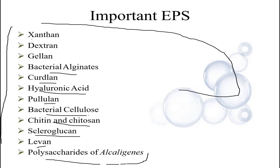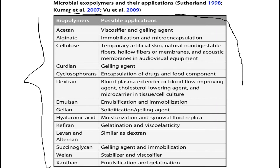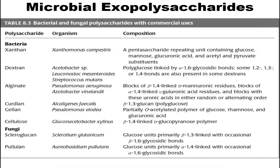Moving on to the biopolymer application table: xanthan's application is in emulsification and gelation. There is also a table showing all EPS under bacteria and fungi — for bacteria we have xanthan, dextran, alginate, curdlan, and gellan; for fungi we have scleroglucan and pullulan. The table includes the corresponding producing organisms and their composition.